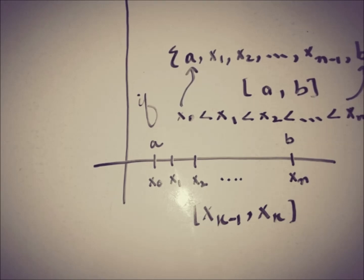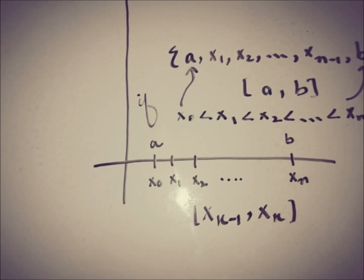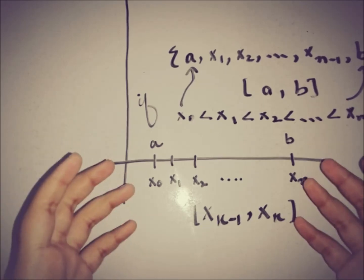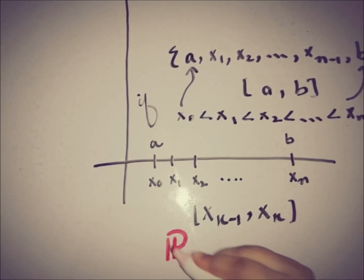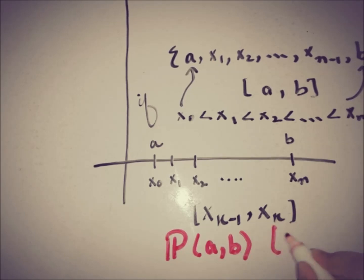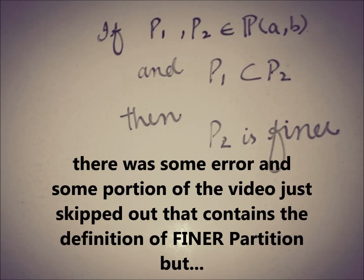This is only one partition we are discussing right now, but there are infinitely many possible such partitions. We can form a set of all these partitions, denoted by P — this is the set containing all partitions of [a, b].